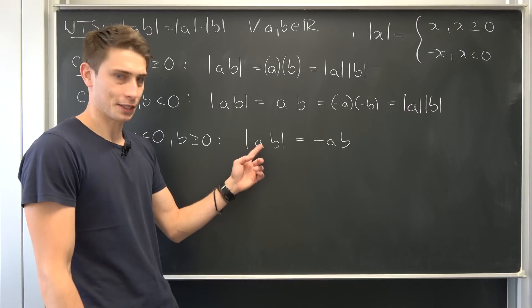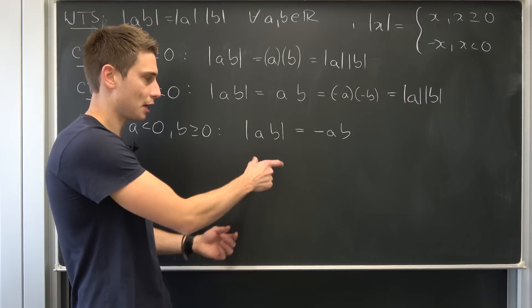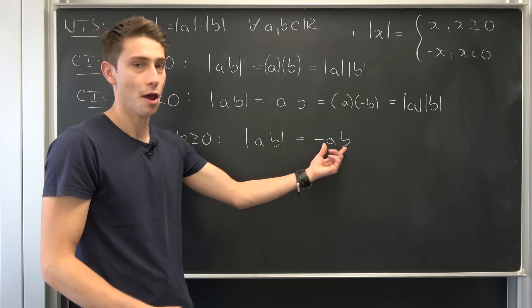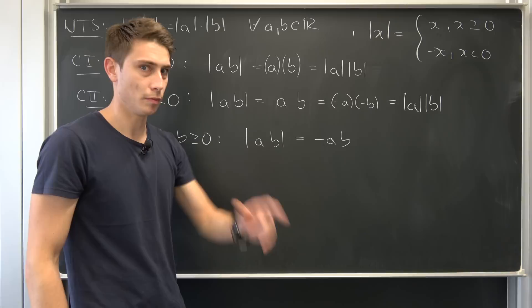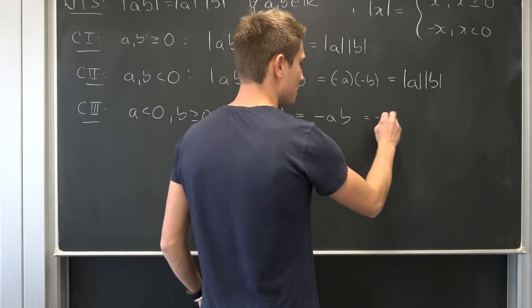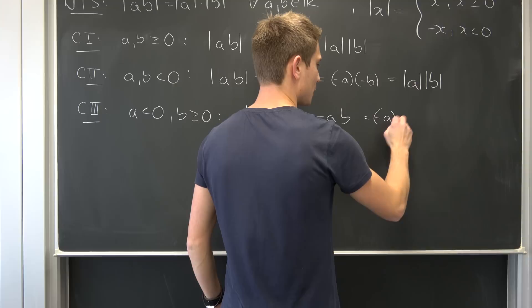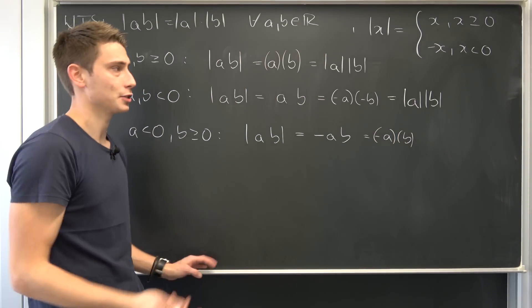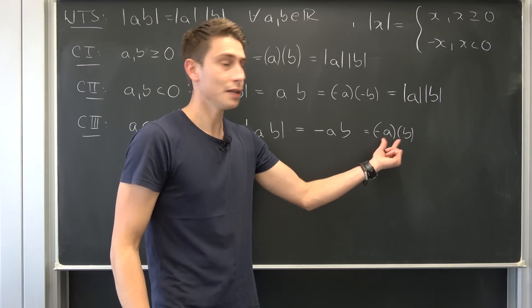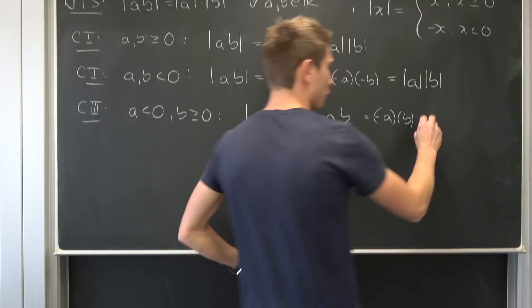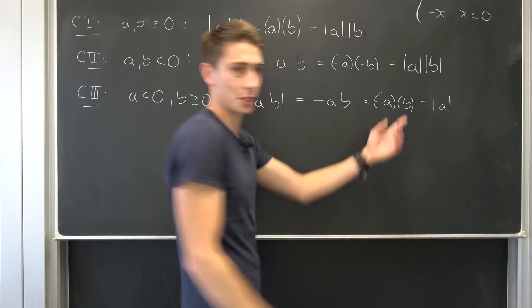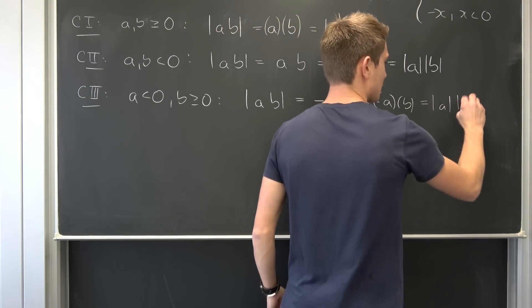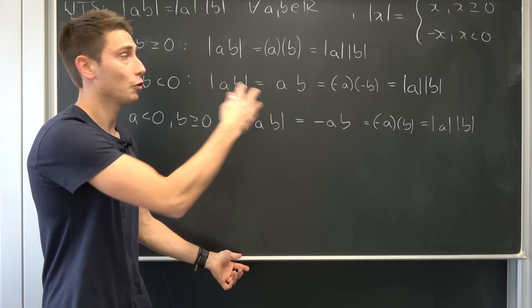So, by this definition, we had a negative argument. Absolute value of something negative is just negative of the argument. So, remember that. We can put it in parentheses. Negative A times B. And you see, A by definition has been negative. Meaning, negative A by this definition is just the absolute value of A. And, well, B is positive. So, clearly, this is just the absolute value of B. And now, we have covered all three cases.